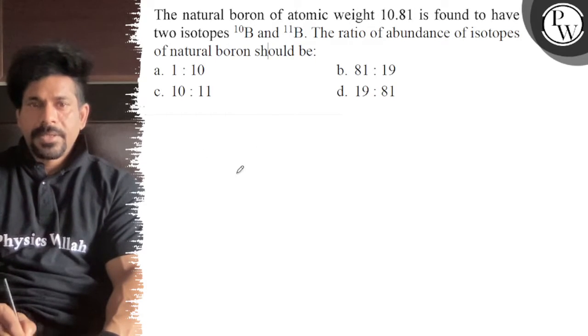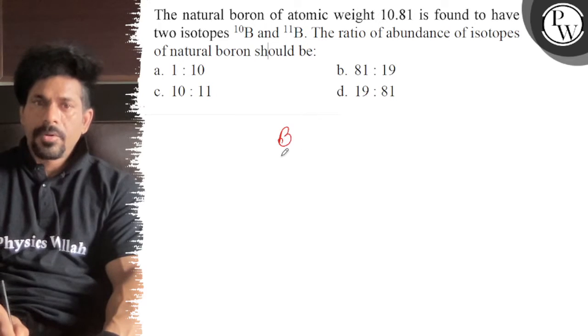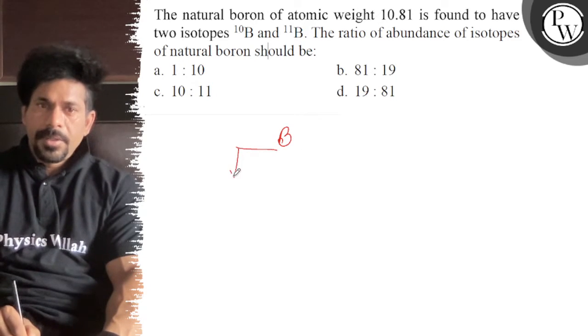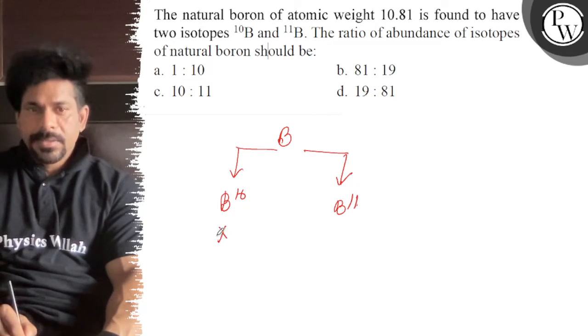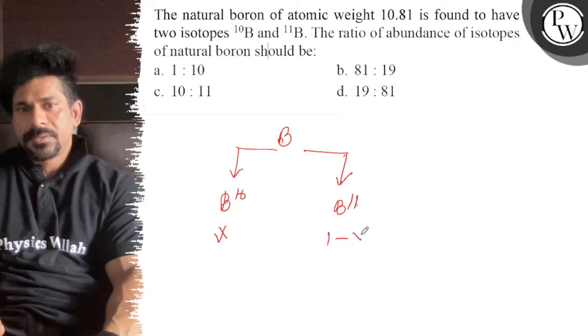So if we see here, we have boron and natural boron. It is made of boron-10 and boron-11. So let's say this is x, so that will be 1 minus x.